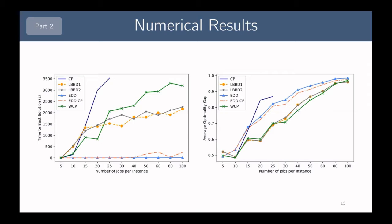On the right, this graph shows the average optimality gap of solutions found by each approach. Looking at the EDD heuristic (blue line) and the hybrid approach fixing the packing and improving the schedule (pink line), at smaller instances the solutions are of lower quality than the LBBD models. However, once we reach larger instances, the hybrid approach and the heuristic are actually able to find fairly comparable solutions in terms of quality to the LBBD models, which is very interesting.